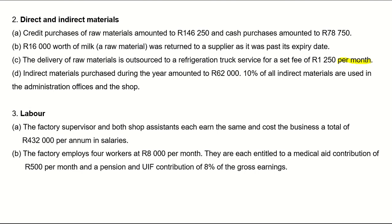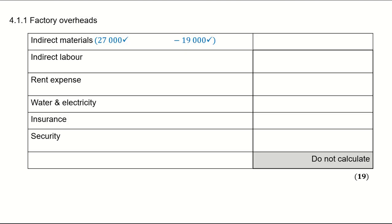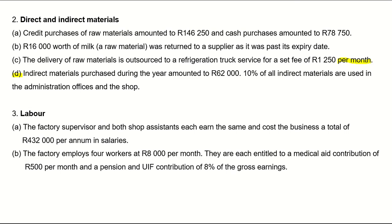Indirect materials purchased during the year amounted to 62,000. Ten percent of all indirect materials are used in the administration offices and the shop — meaning 90% is used in the factory. I add the 62,000 as purchases first, then allocate: 27,000 + 62,000 − 19,000 = 70,000, multiplied by 90%, giving 63,000 for the factory.